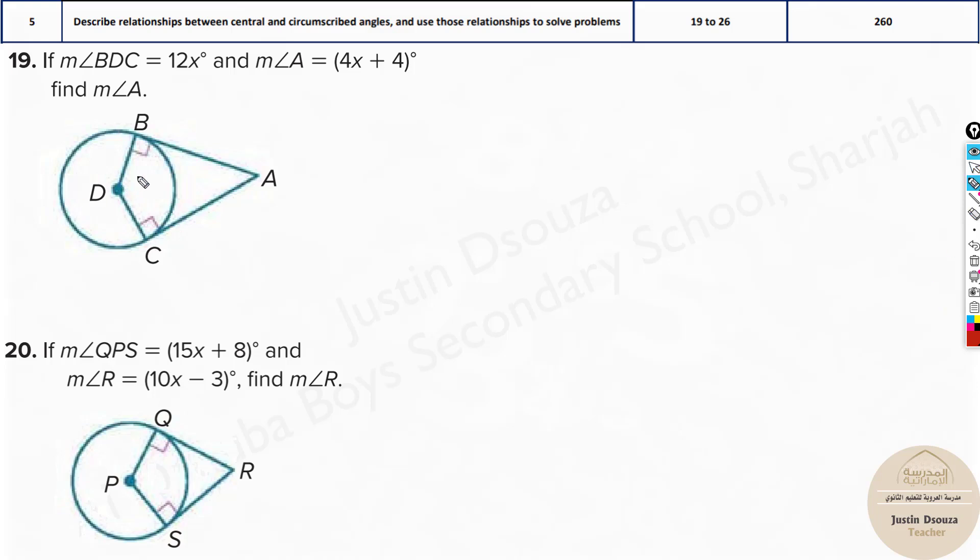You can see this is the central angle, and these are two tangents, so it's 90 degrees. What we need to solve is, measure of BDC is given, this angle is 12x. The measure of angle A is also given to be 4x plus 4, and what is the measure of angle A?